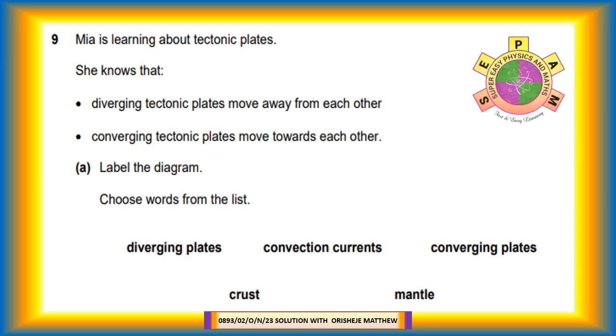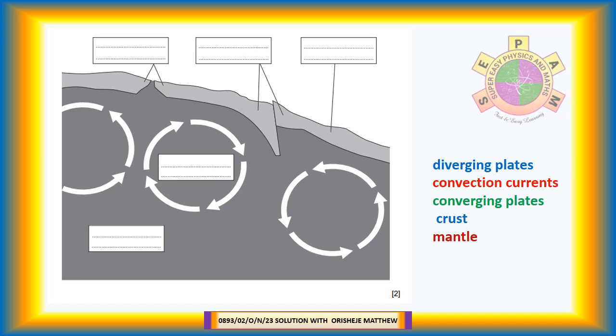Question 9. Mia is learning about tectonic plates. She knows that diverging tectonic plates move away from each other and converging tectonic plates move towards each other. Question 9a: Label the diagram. Choose words from the list: diverging plates, convection currents, converging plates, crust, mantle. So let us label the diagram. The first is diverging plates. The second is converging plates. Third is the crust. Fourth is convection currents in the mantle. The fifth is the mantle.